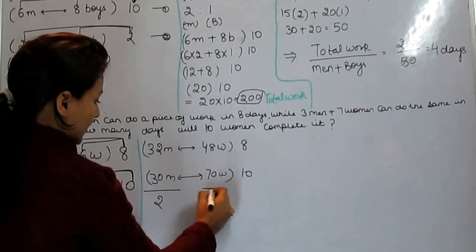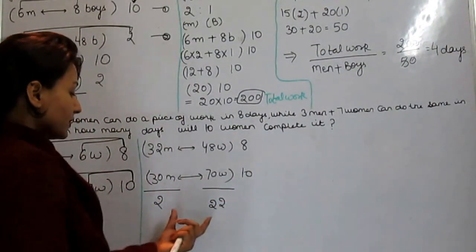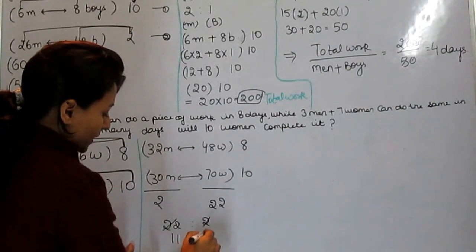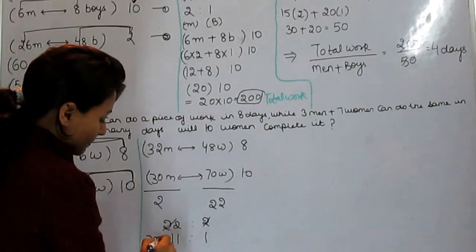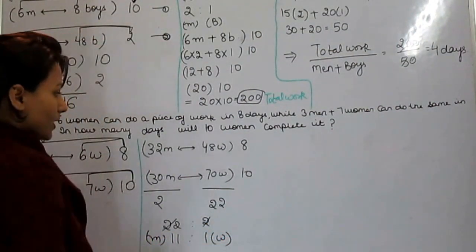This is 2 and this will be 22. Now we put the ratios diagonally that will be 22 ratio 2 and what we get? 11 ratio 1. 11 is the ratio of men and 1 is the ratio of women.